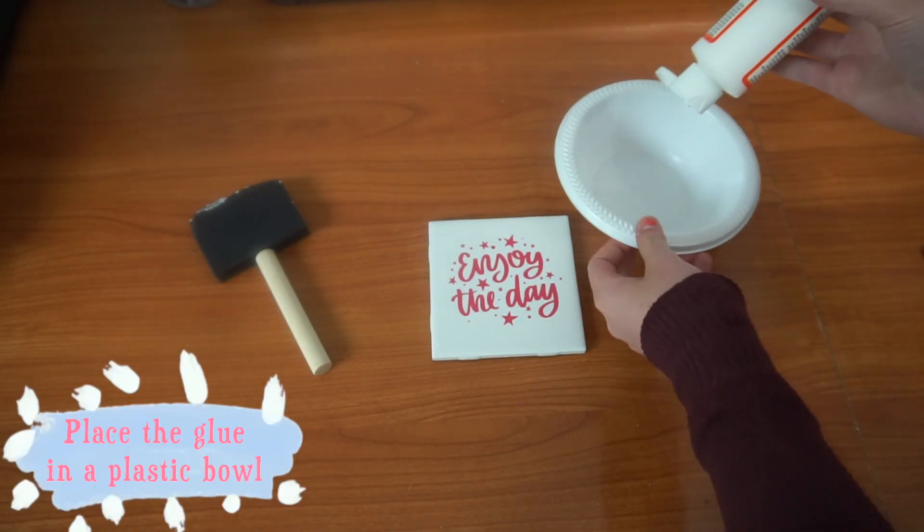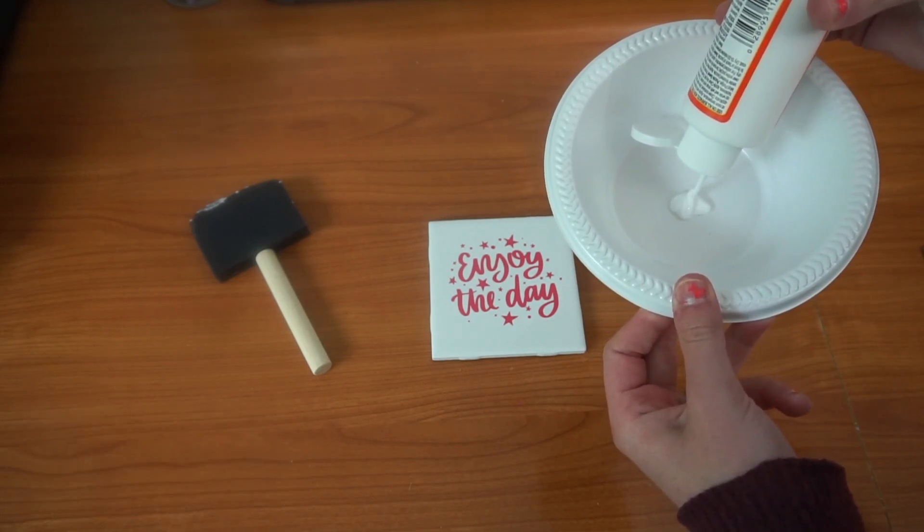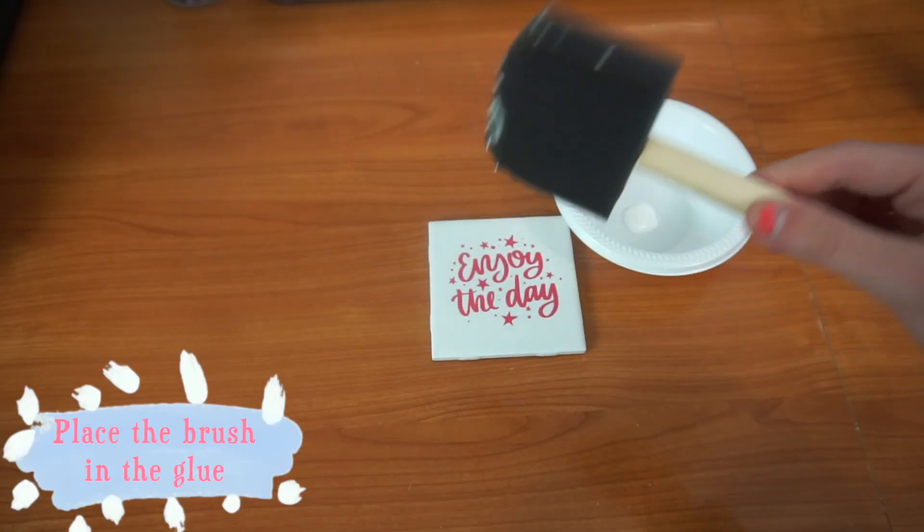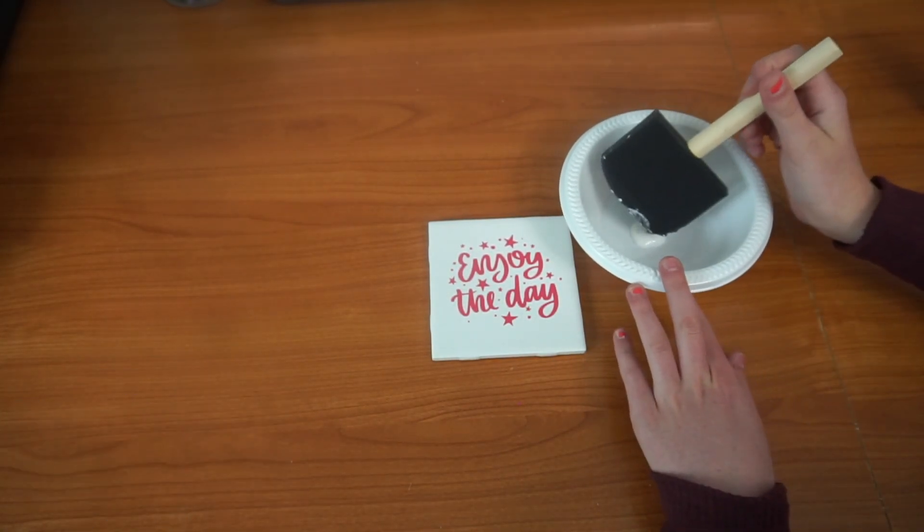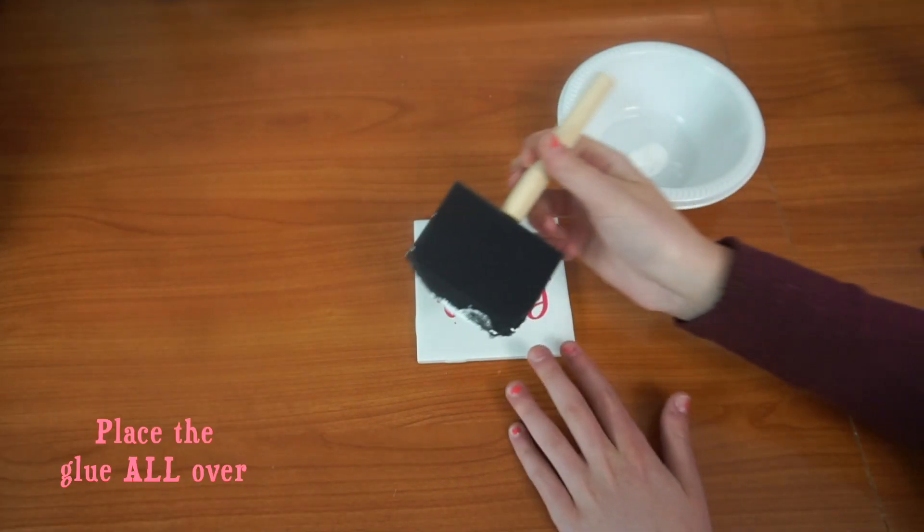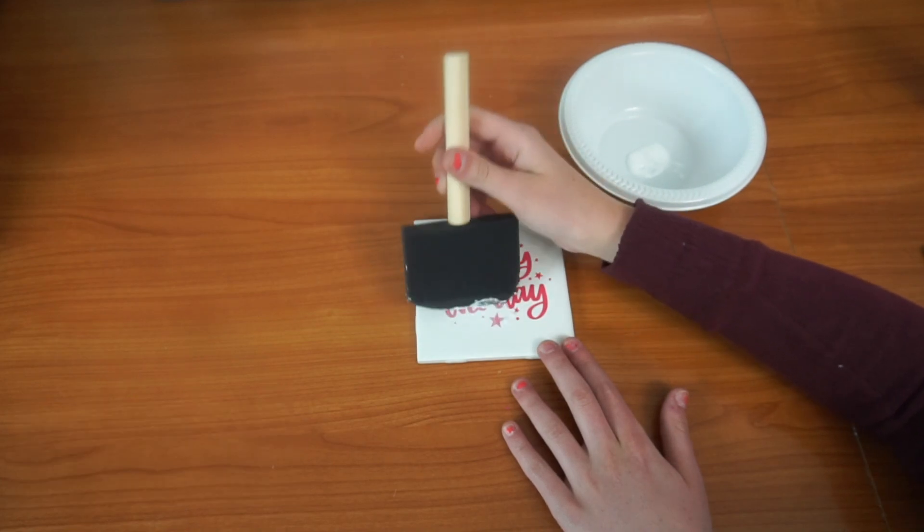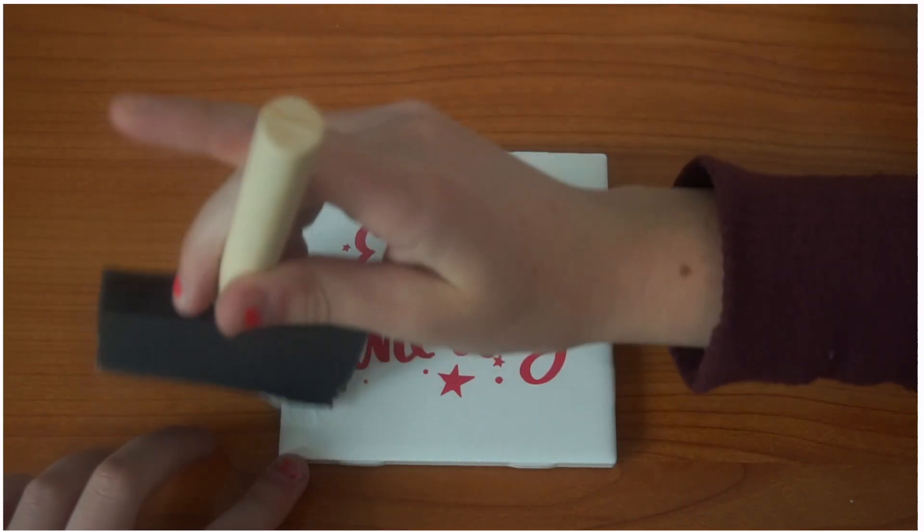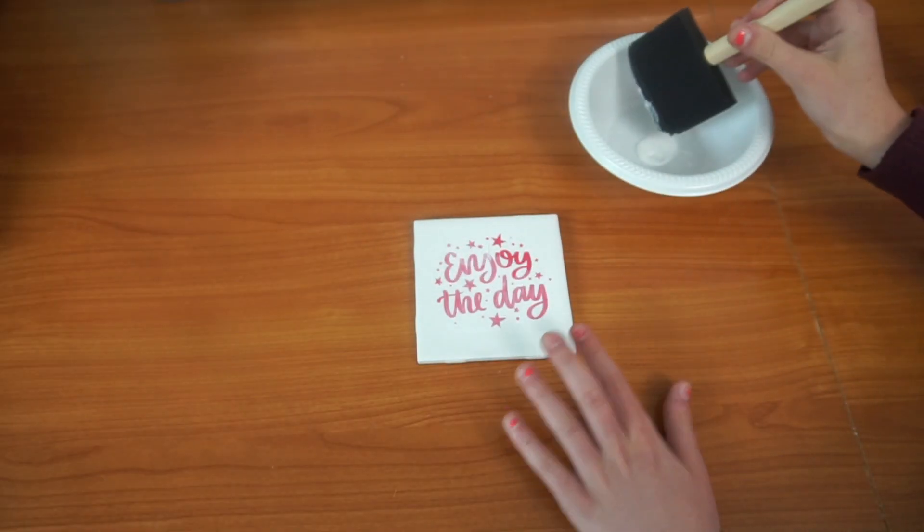Place the glue into the bowl. Dab the brush in the glue. Make sure when you apply the glue to the tile, you apply the glue everywhere. The glue is noticeable once it's on the tile, and it will look weird if you don't apply glue to all areas of the tile.